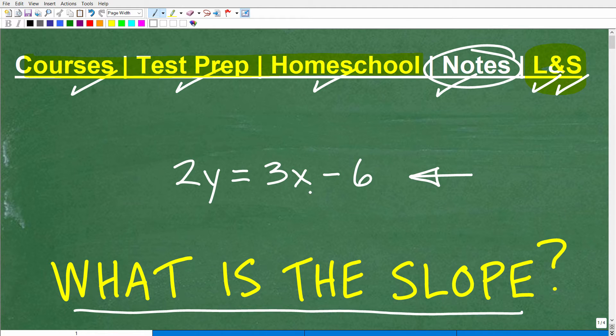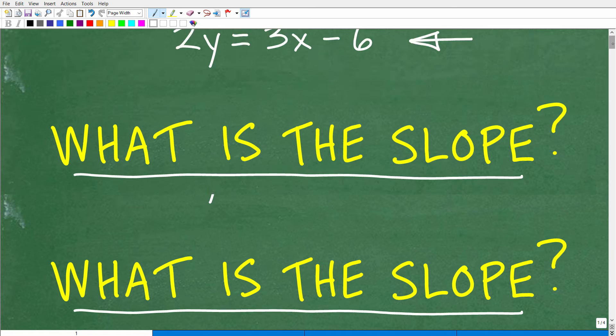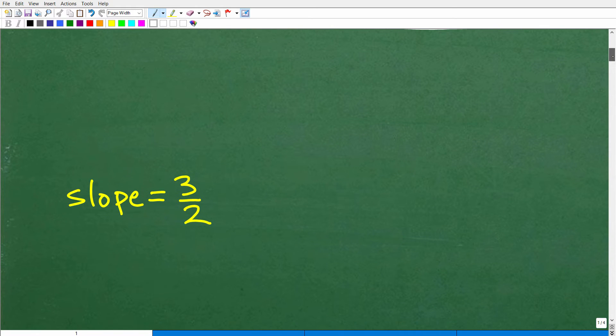We have 2y is equal to 3x minus 6. What is the slope? Well, here it is. The slope of this line is equal to 3 halves. That is the answer.